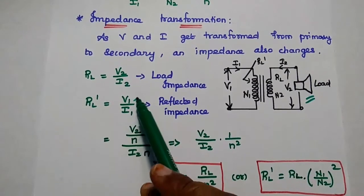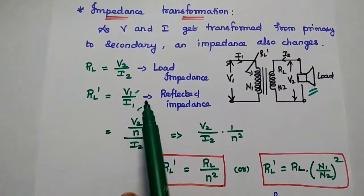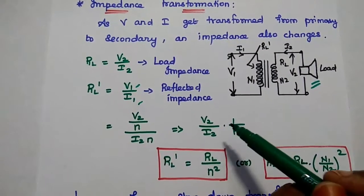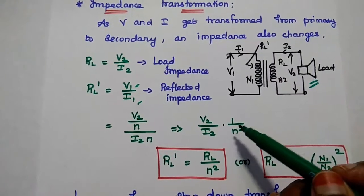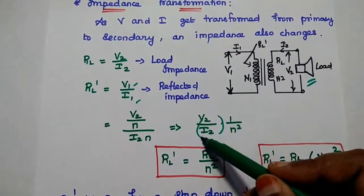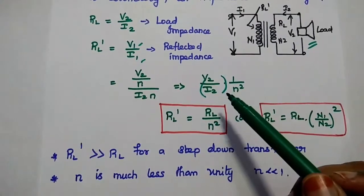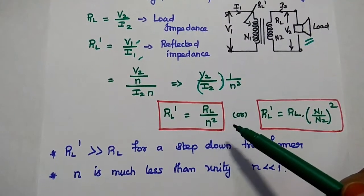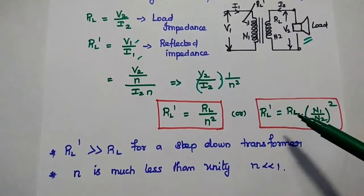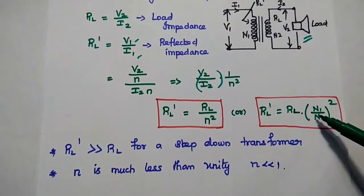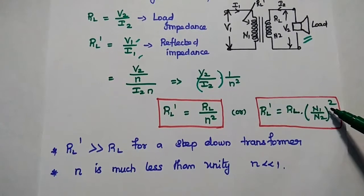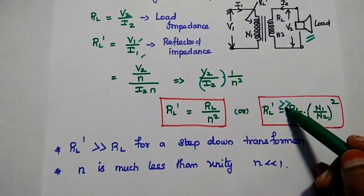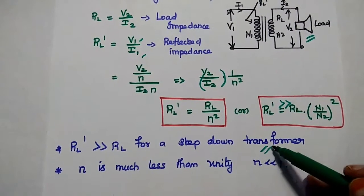We are going to substitute the values of V1 and I1. V1 is equal to V2 by n, and I1 is equal to I2 into n. Then we can get V2 by I2 into 1 by n squared. V2 by I2 is nothing but RL. So this reflected impedance RL dash depends on the load resistor RL divided by n squared. It can also be written as RL dash is equal to RL multiplied by (N1 by N2) whole squared. Here we have to ensure that RL dash value is always greater than RL for a step down transformer.